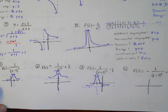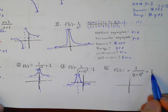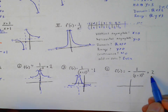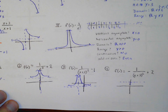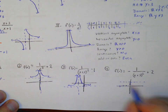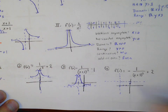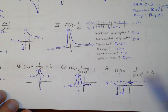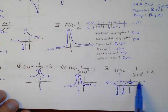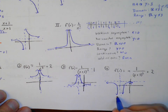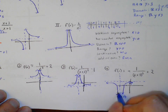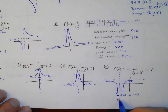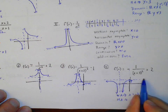For the last example, it moves up 2 and shifts negative 3 (left 3). With a negative out front, remember the negative reflects it over the x-axis — so instead of being above the horizontal asymptote, it's below. The vertical asymptote is at x equals negative 3 and the horizontal asymptote is at y equals 2.